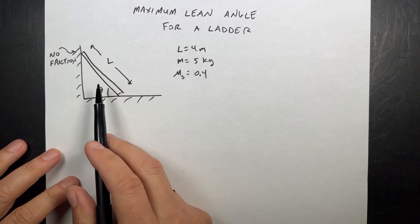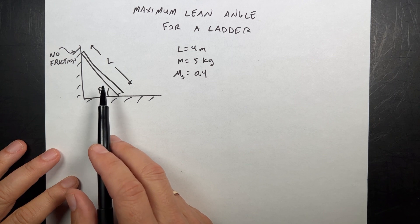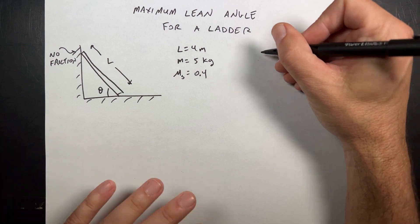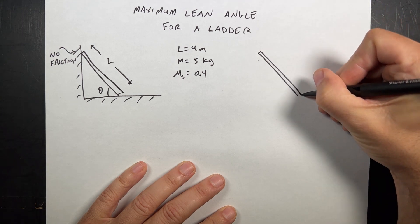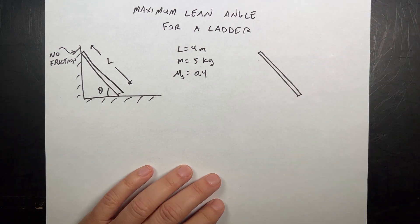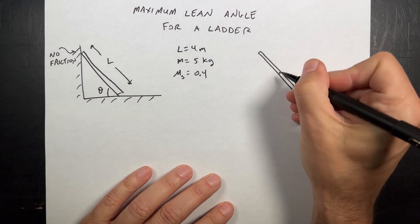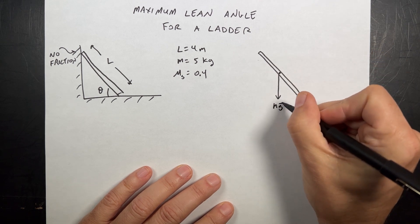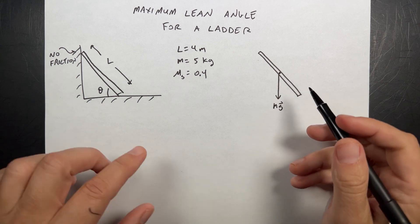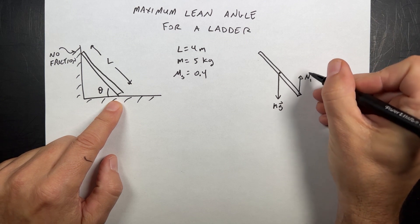If I want the ladder to be in equilibrium, the net force has to be zero and the net torque has to be zero. So let's draw a free body diagram for the ladder. I have the gravitational force — if it's a uniform density ladder, I can treat it as acting at the center of mass, which is at the center of the ladder. The ground is also pushing up on the ladder. I'll call that N1.